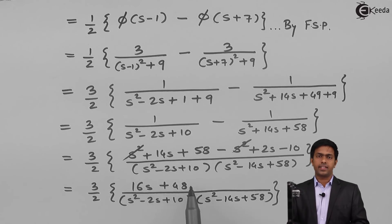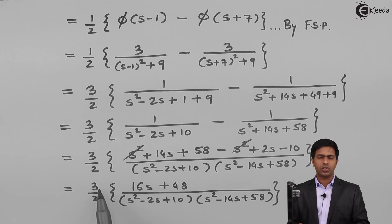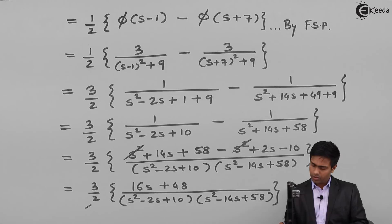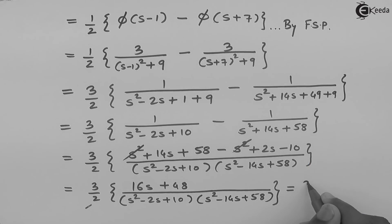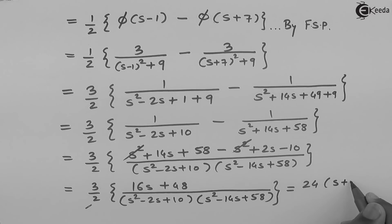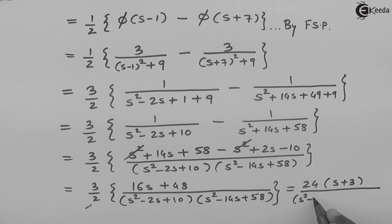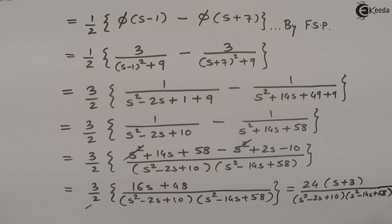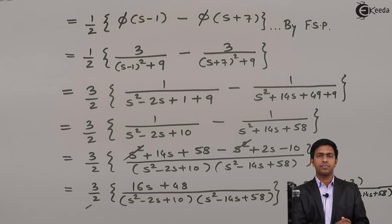Taking 16 common from the numerator: 16(s + 3). Then (3/2) · 16 = 24, giving the final answer: 24(s + 3) / [(s² - 2s + 10)(s² + 14s + 58)]. Thank you.